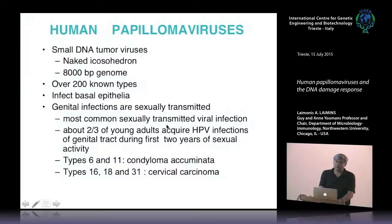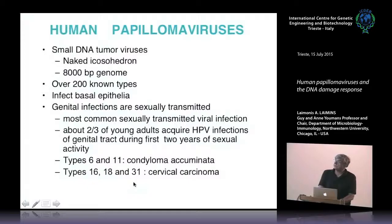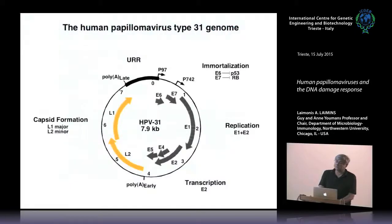The viral infections in the genital tract come in two kinds. There are the low risk types, low risk for progression to genital cancers. And there are about 10 HPV types—16, 18, 31 are examples—that are the high risk HPV types associated with the development of cervical carcinoma. All these viral types have similar genomes.